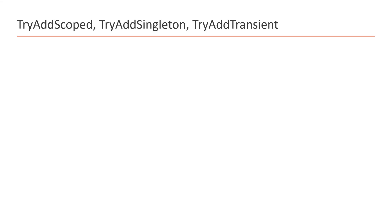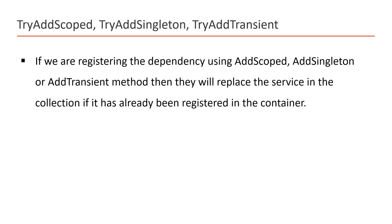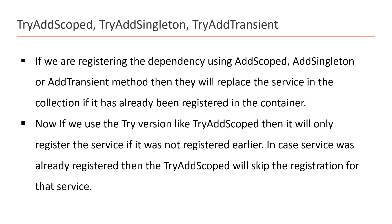To handle this type of scenario in ASP.NET Core, we have three new methods: TryAddScoped, TryAddSingleton, and TryAddTransient. If we use AddScoped, AddSingleton, or AddTransient, they will simply replace the service in the collection if it has already been registered. But if we use the Try version — TryAddScoped, TryAddSingleton, or TryAddTransient — it will only register the service if it was not registered earlier; otherwise it will skip the registration.